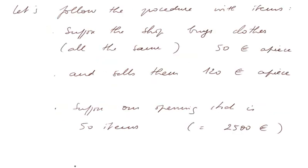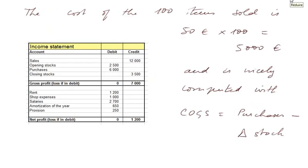And money or value of that amount flowed into the firm. And the closing stock necessarily will be 70 items because we had at the beginning 50 items. We purchased 120 and sold 100. So the closing stock increases by 20 items, will be 70 items. Value for us, 3,500 euros. The cost of these 100 items sold is 50 euros multiplied by 100 equal 5,000 euros. And is nicely computed with the formula COGS equal purchases minus variation in stocks, which is implicitly represented in this presentation.